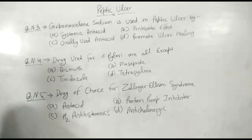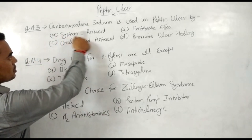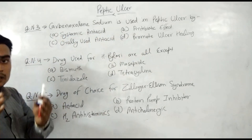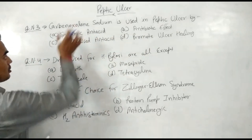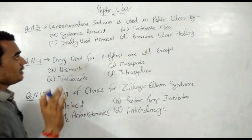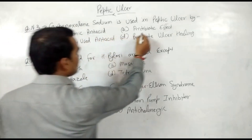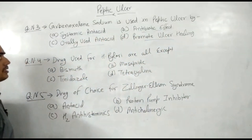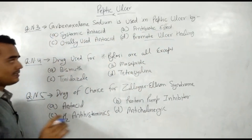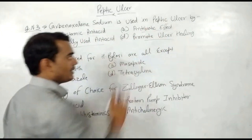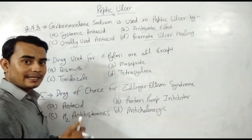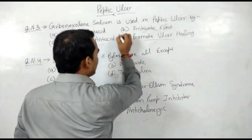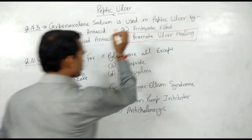Third question: carbenoxolone sodium is used in peptic ulcer by which mechanism? The options are: systemic antacid, antibiotic effect, orally used antacid, and promote ulcer healing. Carbenoxolone is not an antacid — neither systemic nor oral — and does not have antibiotic effect. According to KDT Tripathi classification, carbenoxolone is an ulcer healing drug. That is the correct answer.